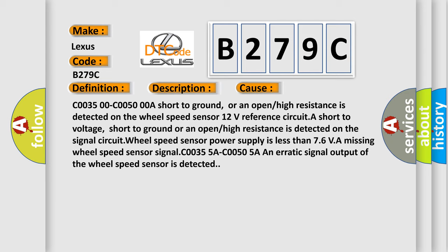12 volts reference circuit. A short to voltage, short to ground, or an open or high resistance is detected on the signal circuit. The airbag reset wheel speed sensor power supply is less than 76V. A missing wheel speed sensor signal and erratic signal output of the wheel speed sensor is detected.